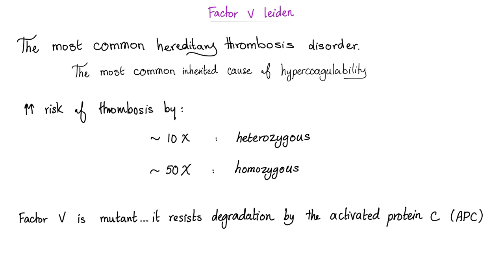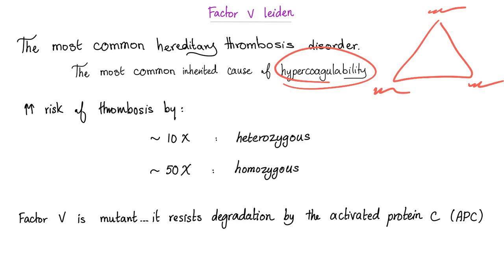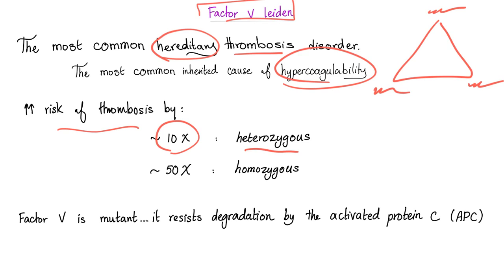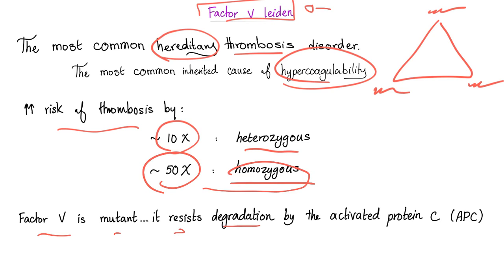Remember Virchow's triad? We had endothelial damage, blood stasis, and hypercoagulability. Factor V Leiden is the most common genetic disease causing thrombosis. Risk of thrombosis increases by 10x in heterozygous Factor V Leiden mutation and by 50x in homozygous mutation. Factor V is mutant — it resists degradation by activated protein C, resisting the brakes, and therefore causes nothing but acceleration of thrombosis.